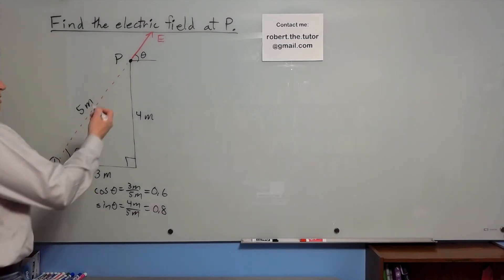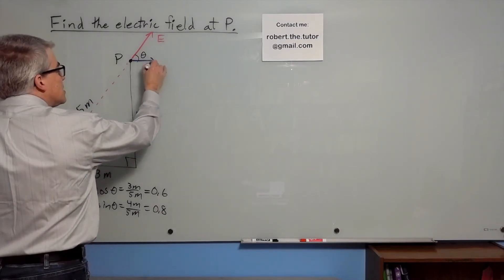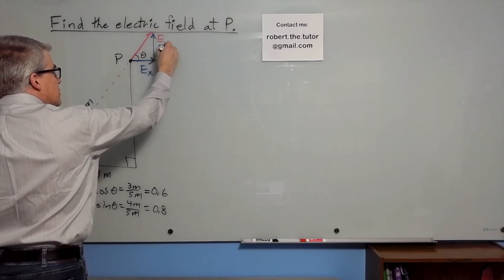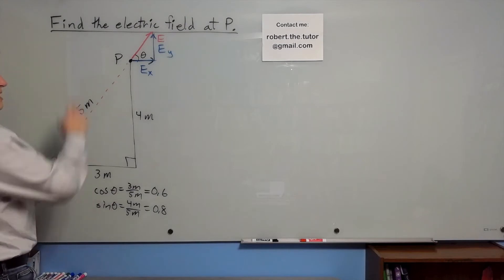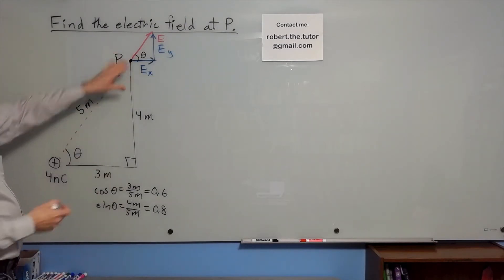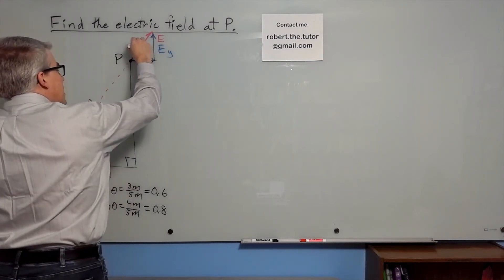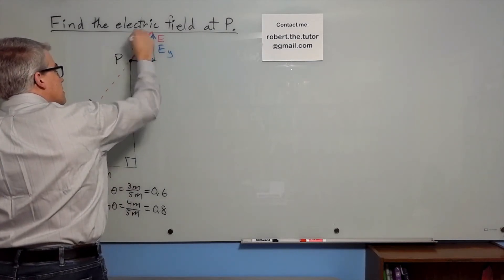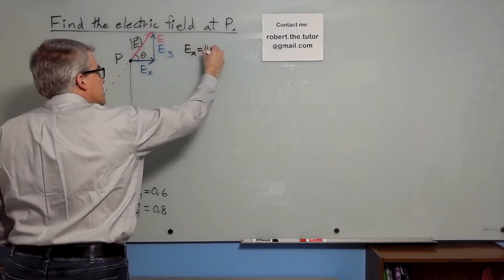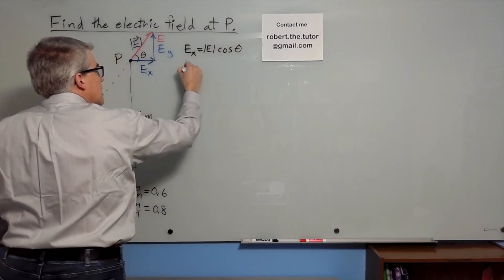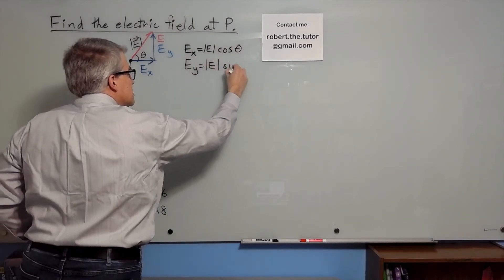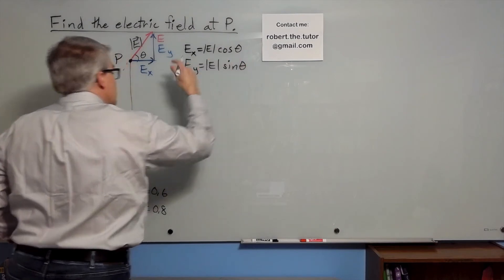We need this electric field, and one thing we could do would be to find the components electric field x and electric field y. That's not strictly necessary, but we can tell from the triangle that if this is the magnitude of E, then the electric field x is going to be magnitude of E cosine theta, and the electric field y is going to be the magnitude of E sine theta, because you have to break the vector into components.